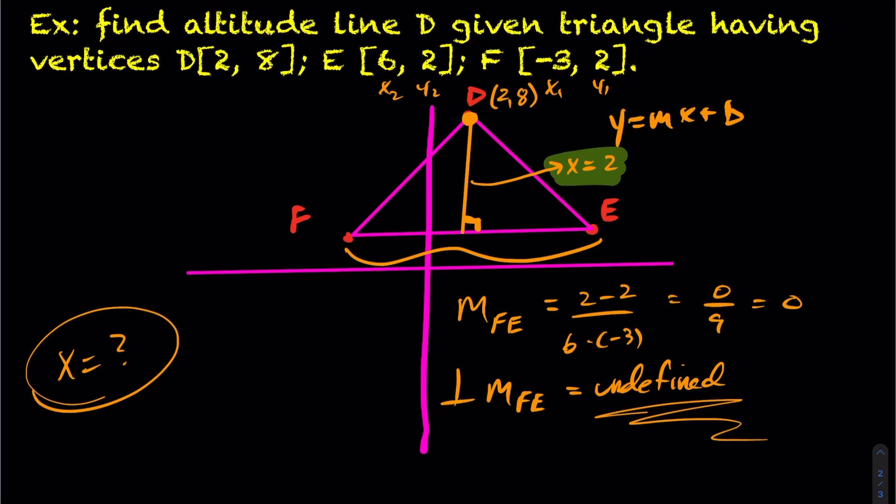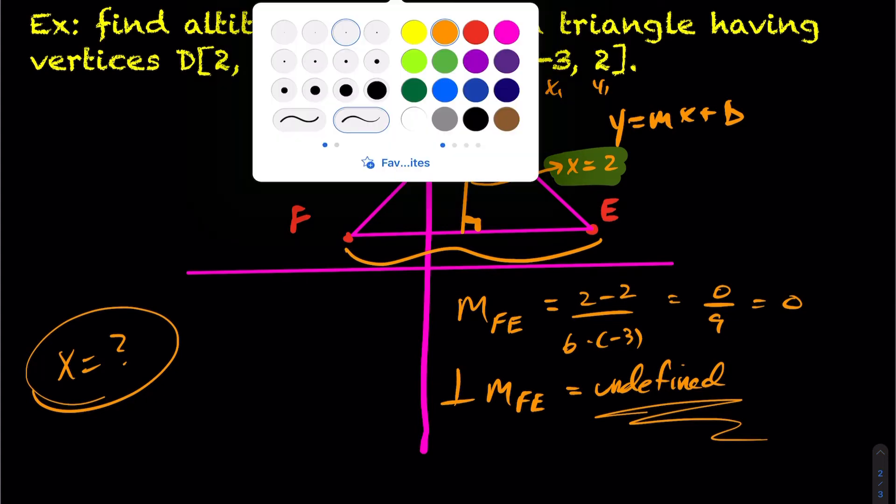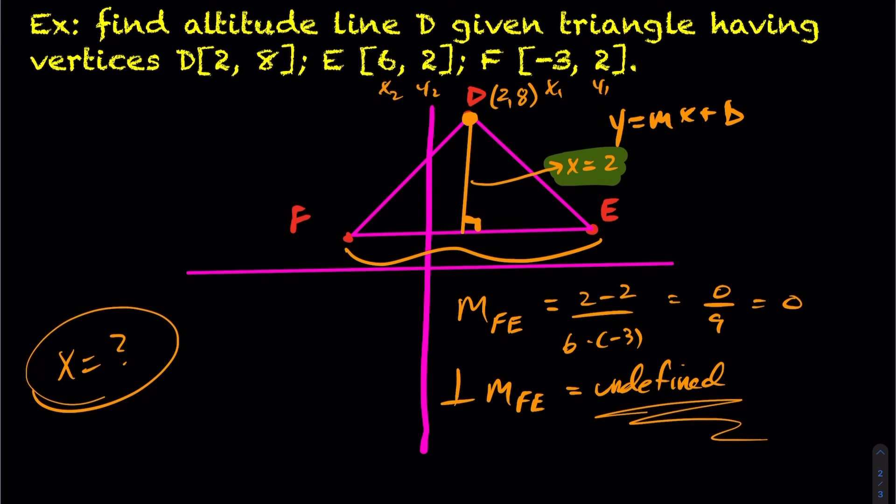And again, if you're struggling with this idea of horizontal and vertical lines from previous years, I'll link a video up in the top right. In this case here, and this question became a little bit easier because of the way the triangle was drawn, the equation of altitude line D is x equals 2.